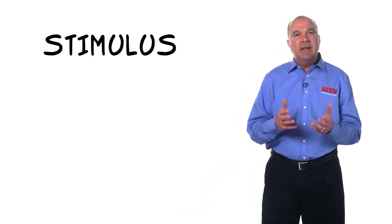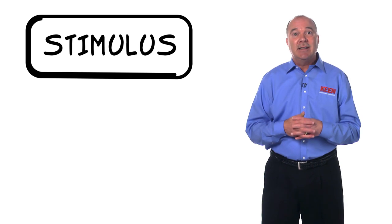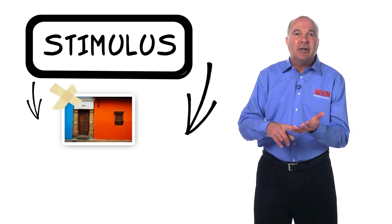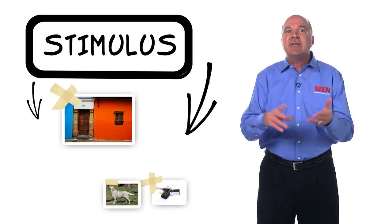With bisociation, we start by putting the stethoscope aside and we concentrate on a stimulus that we add to the ideation process. The stimulus can be anything, a picture, an object, an animal, a piece of art.